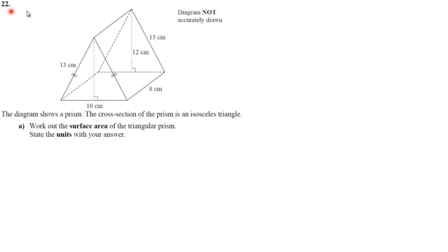This is question number 22. The diagram shows a prism. The cross section of the prism is an isosceles triangle. I can tell that as well because there are these two lines here. That means it is an isosceles triangle.